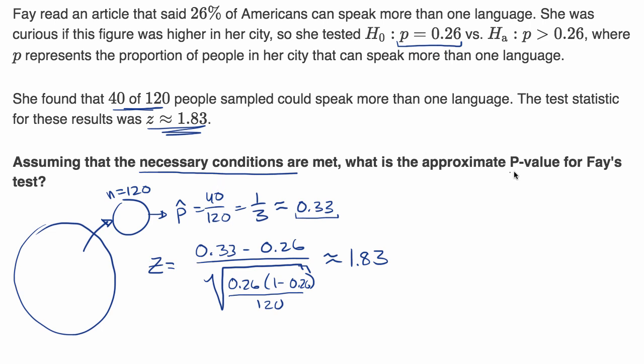What is the approximate p-value? Well, this p-value would be equal to the probability of, in a normal distribution—we're assuming that the sampling distribution is normal because we met the necessary conditions—so in a normal distribution, what is the probability of getting a z greater than or equal to 1.83?